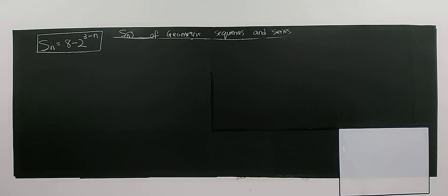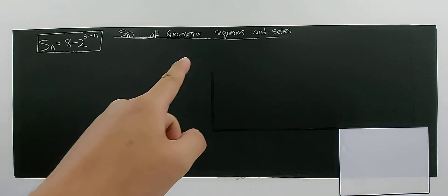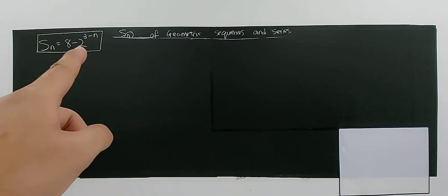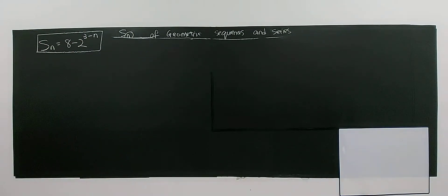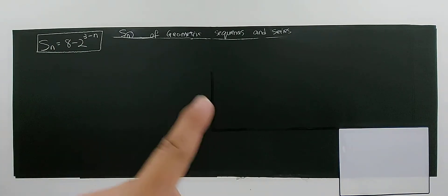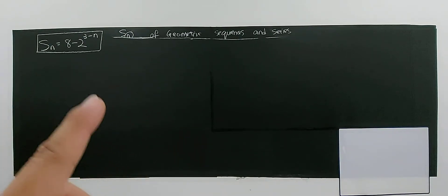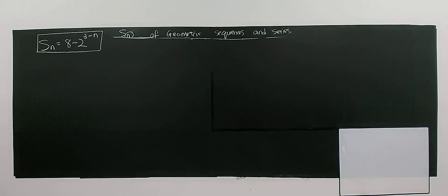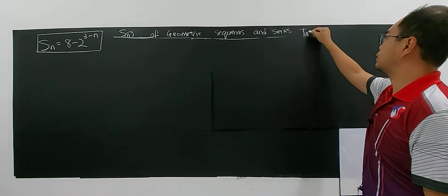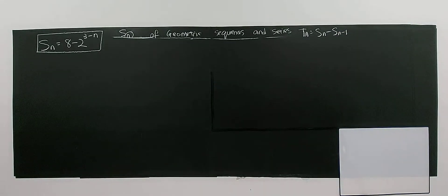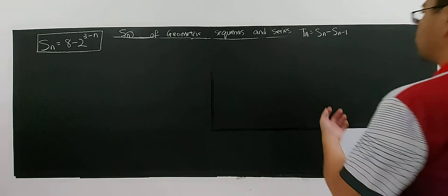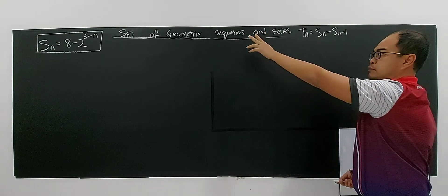This question involves showing that the sum of the series SN represents the sum of a geometric sequence. The question never states this directly, so you have to prove that SN is the sum of the first N terms of a geometric sequence. This concept was discussed in a previous video on geometric sequences, where we use the formula TN equals SN minus SN-1. Please refer to that video.